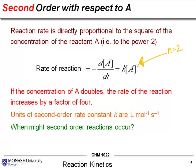What does this mean? How is this different to first order? Well let us think about that. If the concentration of A doubles, then the rate of the reaction is actually going to increase by a factor of 4.